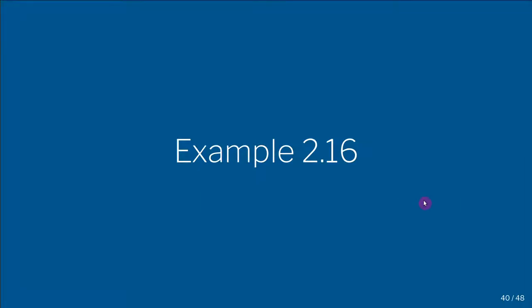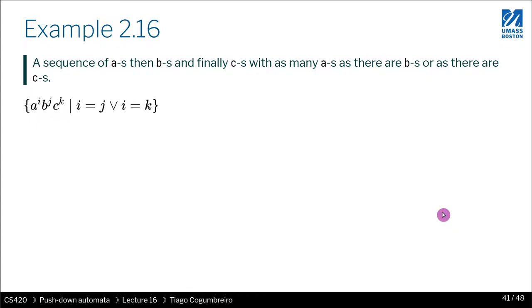I want to talk about example 2.16, which is also found in the textbook. The idea is that we want to read a's, b's, and c's where the number of a's is the same as the number of b's or the number of a's is the same as the number of c's. As you might imagine, this is a non-regular language.